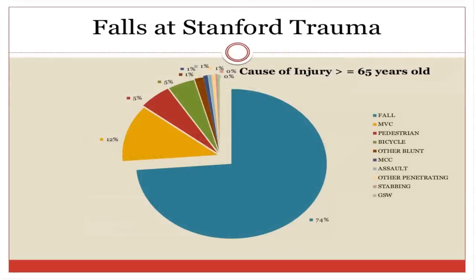Ellen Corman, Supervisor of Community Outreach and Injury Prevention at the Trauma Center of Stanford University Medical Center, begins. As a Level 1 trauma center, we are obligated to look at data and design injury prevention programs to meet community needs. For all ages, motor vehicle collisions are the greatest cause of injury. But for older adults — 65 years and older — the greatest number of admissions to our trauma center are from falls: almost 75% of traumas at Stanford.